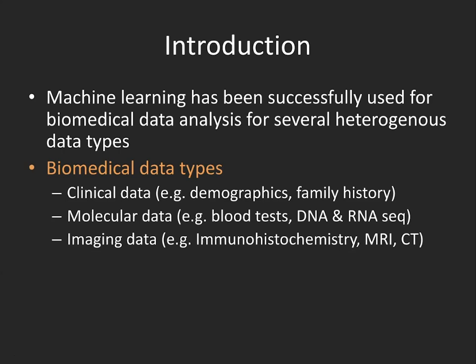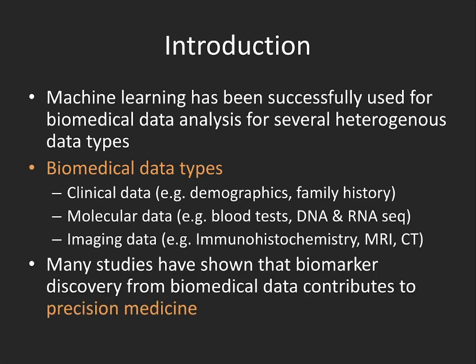In terms of different types of biomedical data, what do I mean with that? This can be, for example, clinical data, molecular data, imaging data. These are all more and more routinely available for complex diseases and for patients, especially in the area of oncology. Many studies have shown that biomarker discovery from these different types of data can contribute to precision medicine.